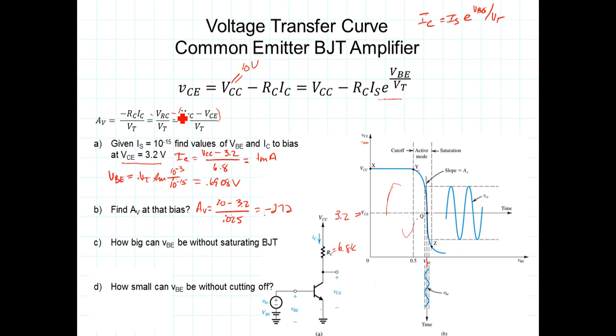Our next point is, how big can this VBE signal get? How big can VBE get before we run into the saturation region? We have this equation that defines the current voltage relationship along that curve. We go into saturation when the voltage across the transistor, the VCE sat, is on the order of 0.3 volts at the edge, at the border.